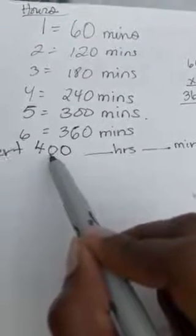What I'm going to do is look at this 400 minutes. The closest amount of minutes here that I've already calculated is 360. It's not bigger than 400, but it's the closest to 400.